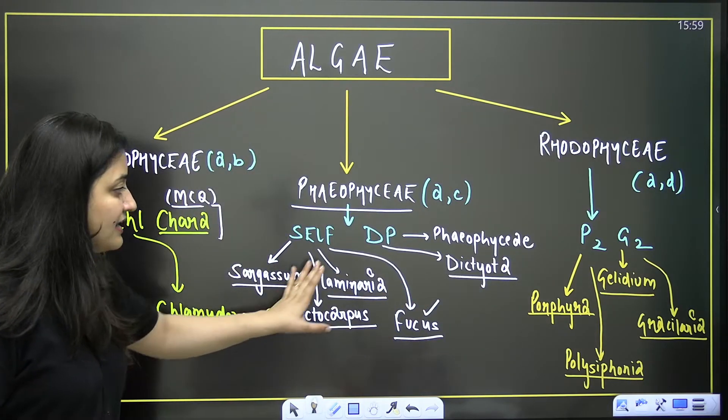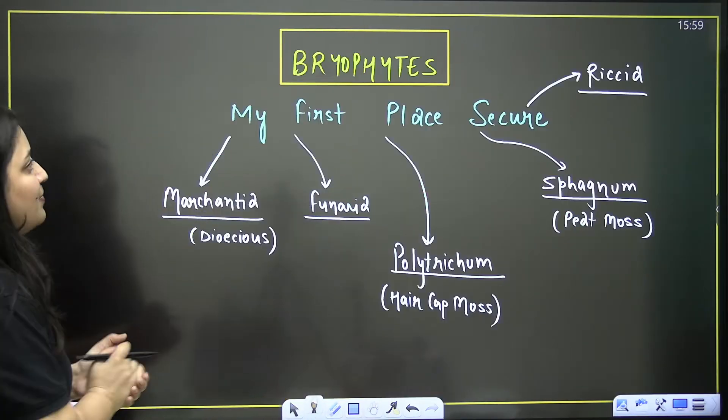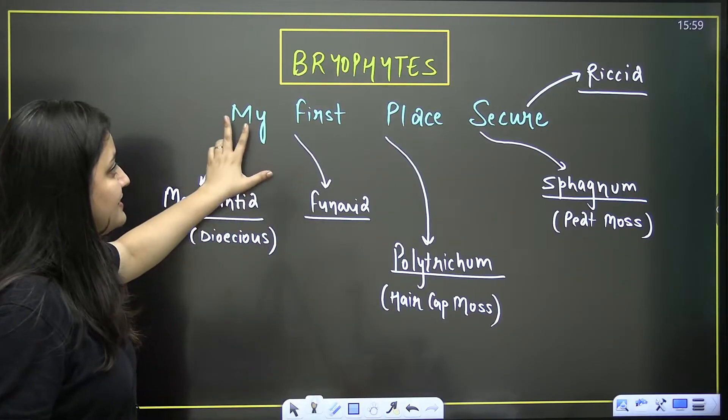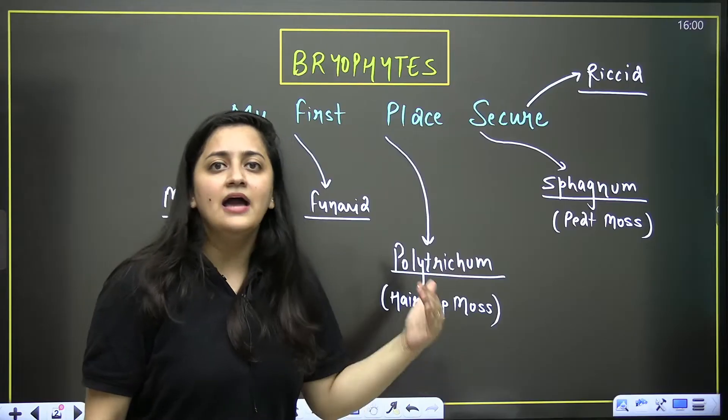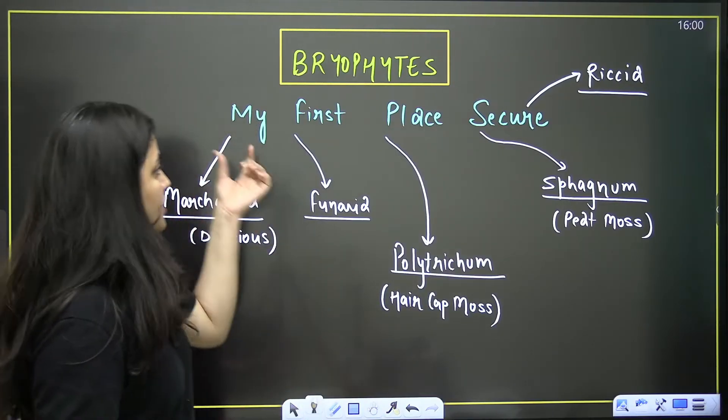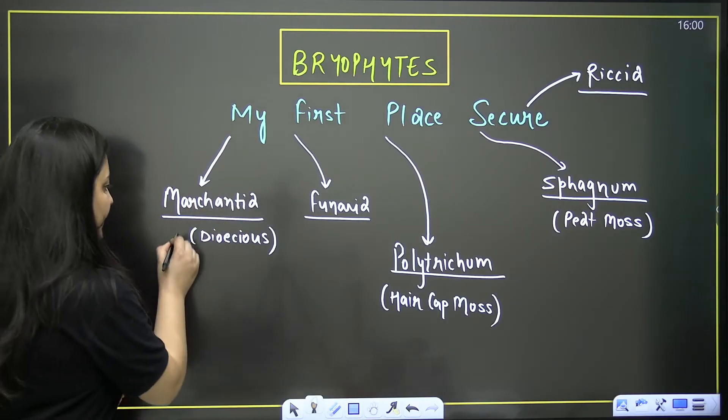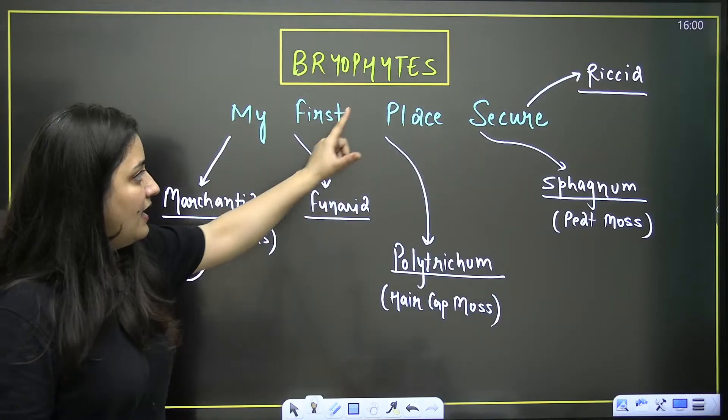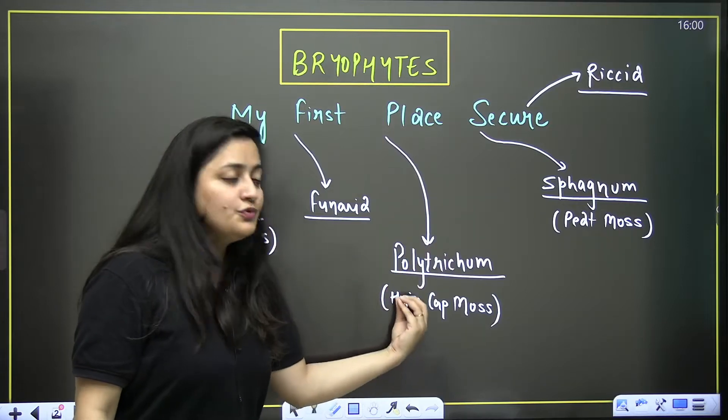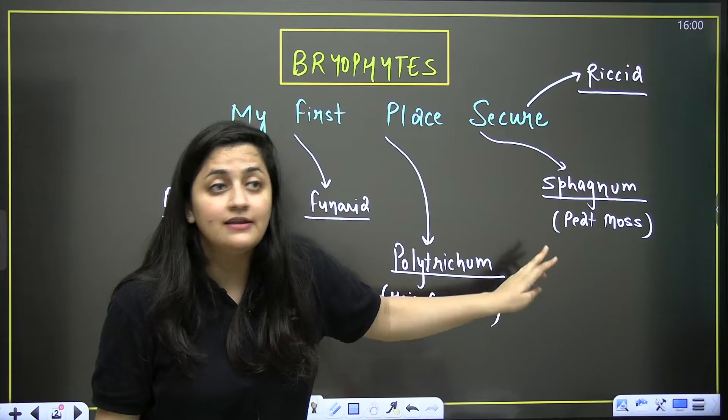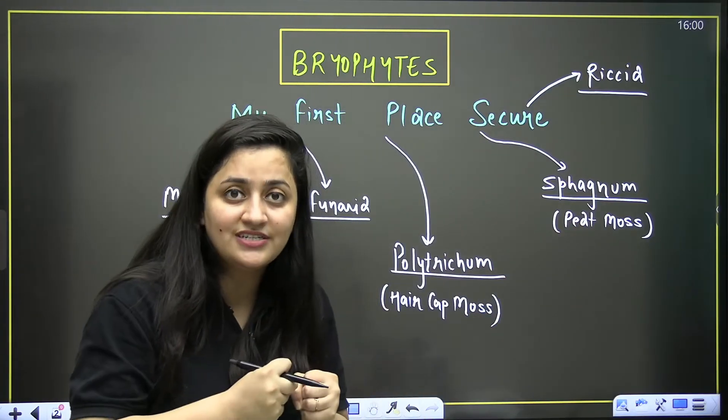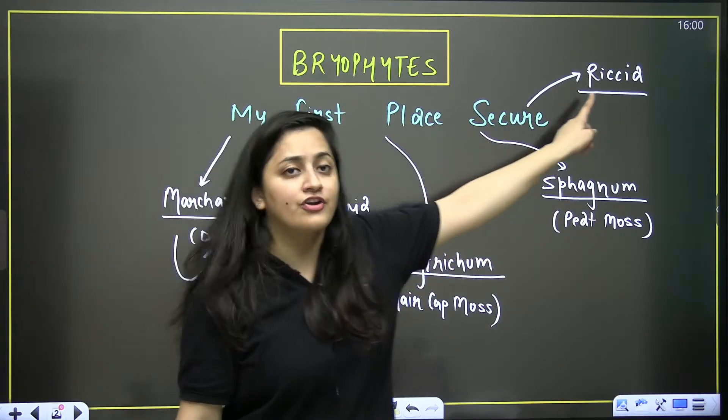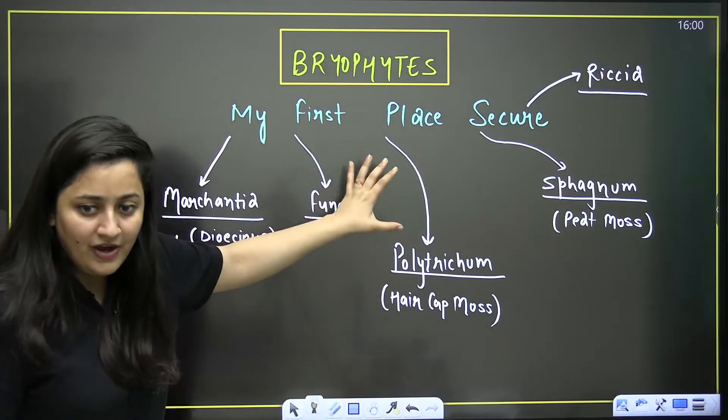Next part: bryophytes, the amphibians of plant kingdom. The trick is 'my first place secure'. M is Marchantia, a liverwort, and it is dioecious. F for Funaria, P stands for Polytrichum, also known as hair cap moss. Secure: S stands for Sphagnum, peat moss, from which peat is obtained having water retention capacity and acts like fuel. R for Riccia, again an example of bryophyte. Bryophytes have haplodiplontic life cycle.